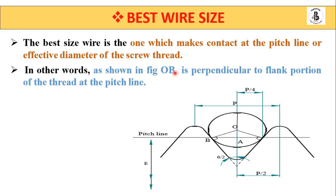As shown in the figure, the distance O to B is always perpendicular to the flank of the thread at the pitch line. This point intersects on the pitch line as well as at right angles — perpendicular to the flank of the thread. This is the single condition for which the best wire size method works.